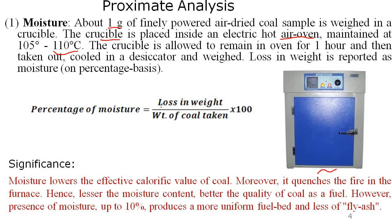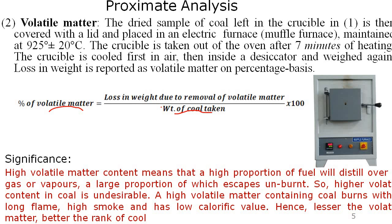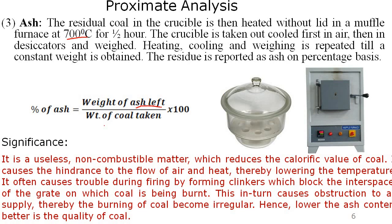To summarize proximate analysis: moisture content should be low for good quality coal and high calorific value. Volatile matter should also be in the least percentage. Ash should also be in the least proportion. All three should be present in minimum percentage to achieve the highest calorific value. These are the parameters used in proximate analysis.